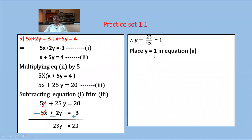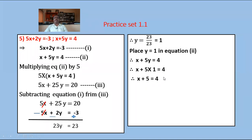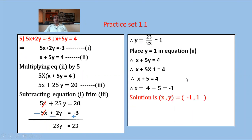Substitute y equals 1 in equation 2: x plus 5y equals 4. So x plus 5 into 1 equals 4, giving x plus 5 equals 4. Moving 5 to the RHS: x equals 4 minus 5 equals minus 1. Hence the solution of the given simultaneous equation is x equals minus 1 and y equals 1.